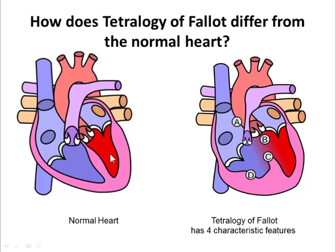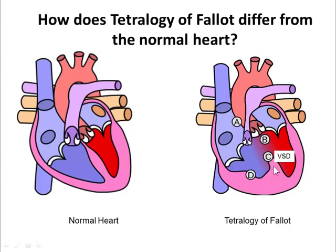There are several differences if we look at the cartoon depicting Tetralogy of Fallot. There are four characteristic features. Firstly, there is a ventricular septal defect, which is a hole in the wall separating the red and the blue blood. We can see that the body artery, the aorta, sits over this hole — this is termed an overriding aorta. The lung artery or pulmonary artery is much slimmer usually in Tetralogy of Fallot than in the normal heart, but there is a wide spectrum of sizes.